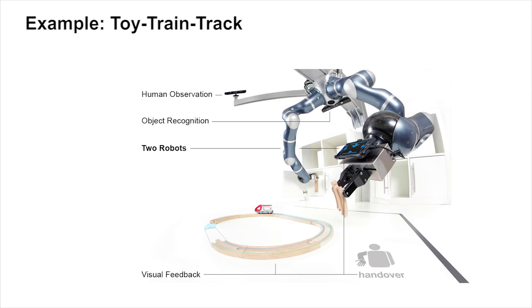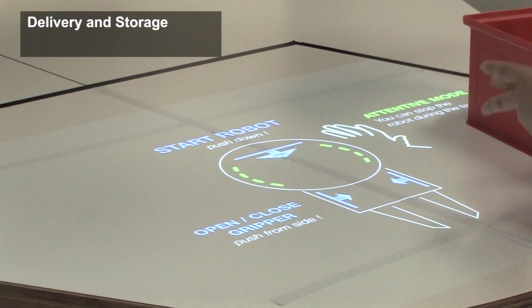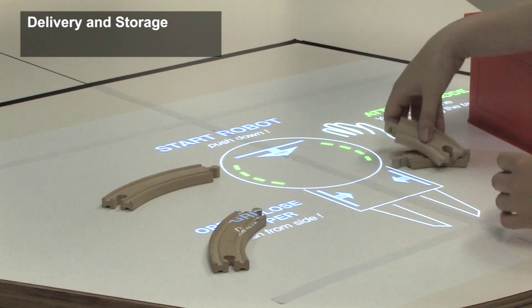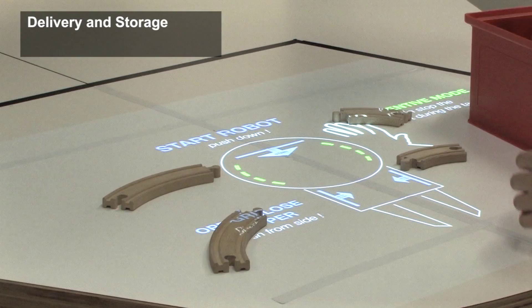As a concrete implementation, we choose a toy train track assembly, which is comparable to industrial assembly tasks in terms of complexity. The setup consists of two robots, a multi-camera system for detecting humans and objects, and interactive displays visualizing relevant task information.